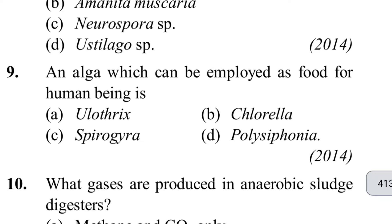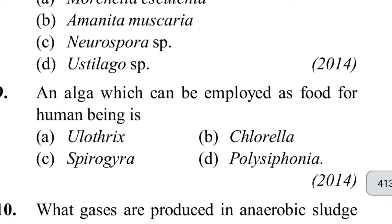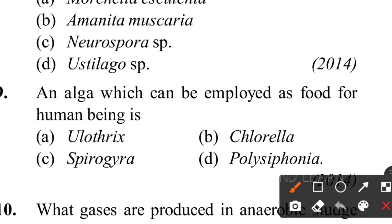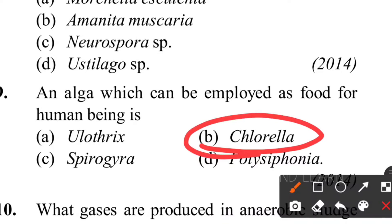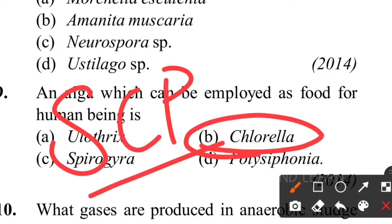Ninth question: which alga is employed as food for human beings? The answer is Chlorella. We use Chlorella as SCP - Single Cell Protein.